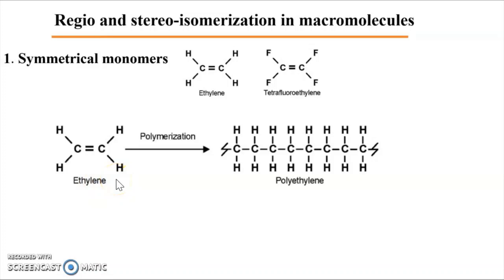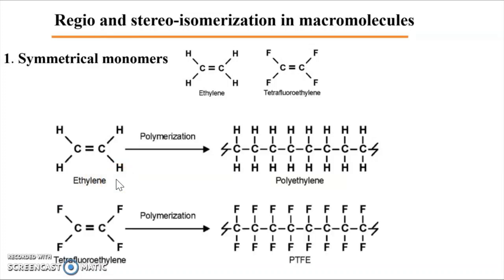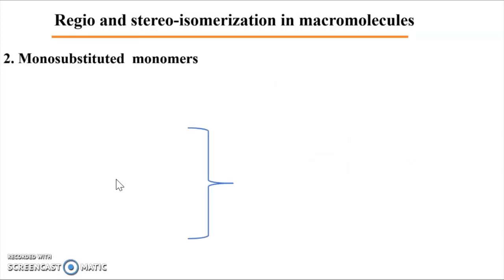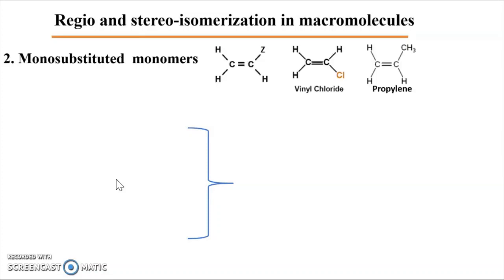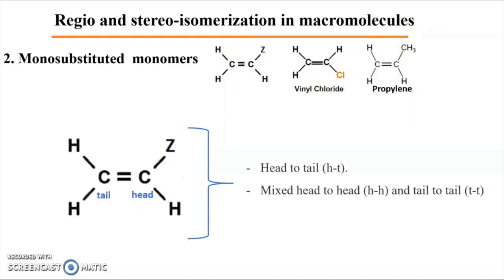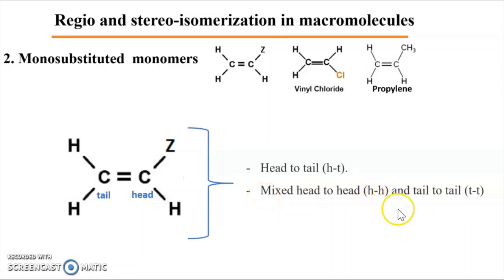The monomers can join each other in only one way. But in the second case, if the monomers are monosubstituted — if we have a Z-substituent over the carbon, like Cl, CH3, etc. — monomers may join each other in two different ways: via the head, meaning the carbon carrying the Z-substituent, or the tail, the second carbon. So we have head-to-tail addition, or we have head-to-head and tail-to-tail addition.